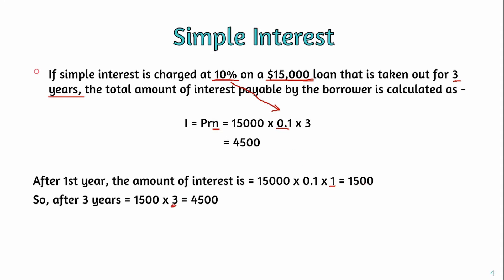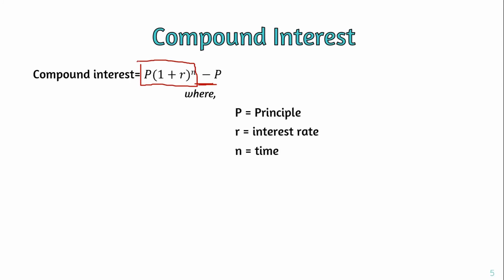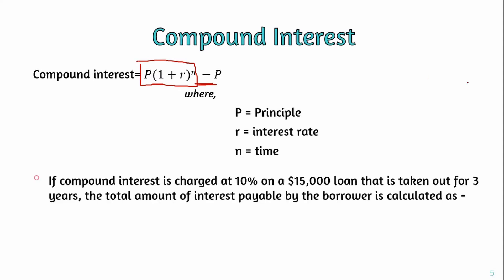Now the compound interest formula is P times (1 plus R) to the power of N, minus P. This formula gives us the compound interest earned. Here P is the principal amount, R is the interest rate, and N is the time period.